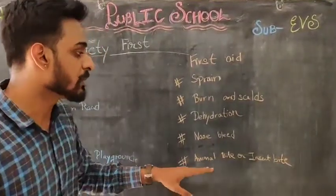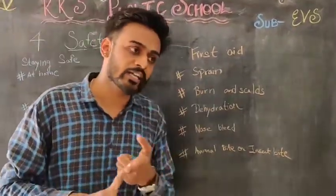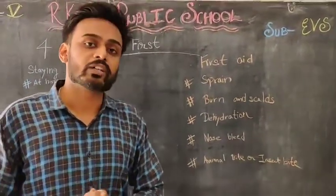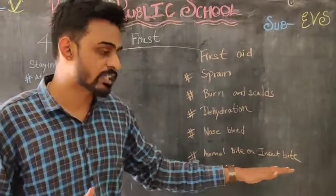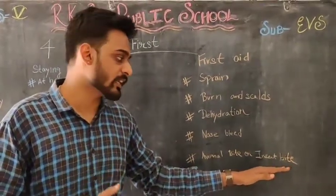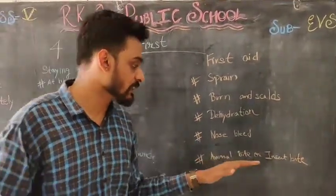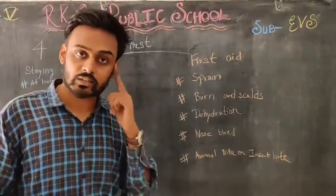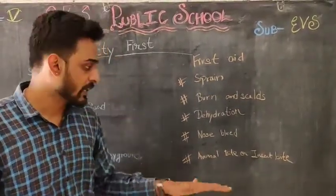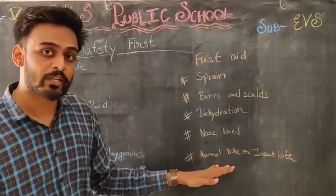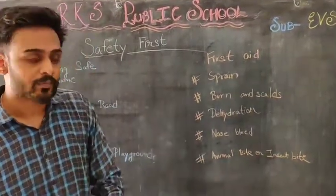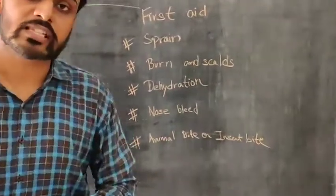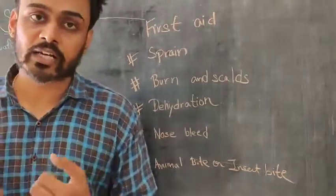Animal bites include bites of dogs. Insect bites include the bite of venomous insects, and venom can be injected by a snake into our body. In case of animal bites like a dog bite, we should immediately go to the doctor, as it can cause rabies. We should take proper prescription from the doctors. In the case of insect bites, the venom spreads in the body quickly.